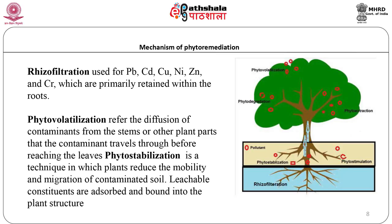There are several drawbacks and advantages of phytoremediation. The cost of phytoextraction is fairly low compared to conventional methods. Another benefit is that the contaminant is permanently removed from the soil. In addition, the amount of waste material that must be disposed of is substantially decreased, and in some cases the contaminant can be recycled from the contaminated plant biomass. However, the use of hyperaccumulator species is limited by slow growth, shallow root systems, and small biomass production.